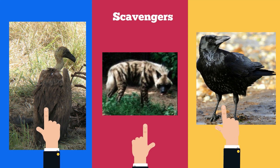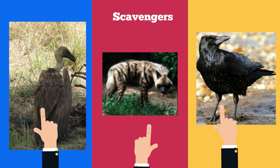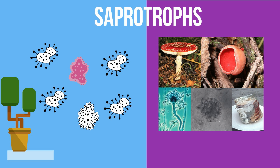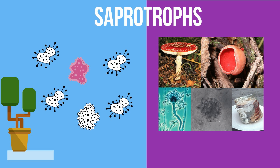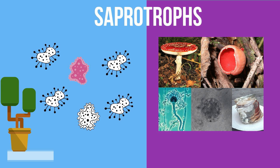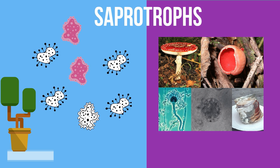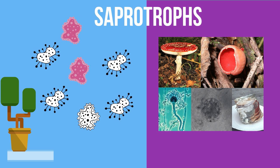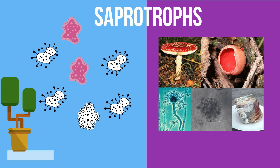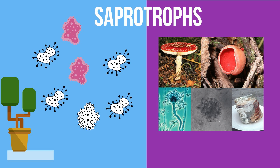Once a plant or animal has expired, scavengers enjoy a tasty meal. Saprotrophs are individuals like bacteria and fungi that feed on organic material by breaking it down using enzymes and then absorbing the nutrition. Common examples include bacteria and fungi.